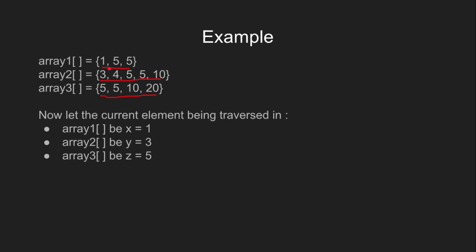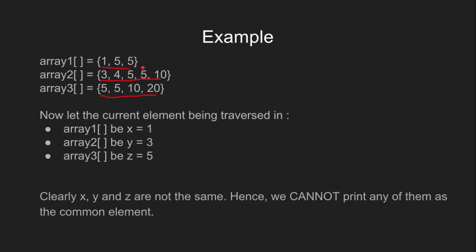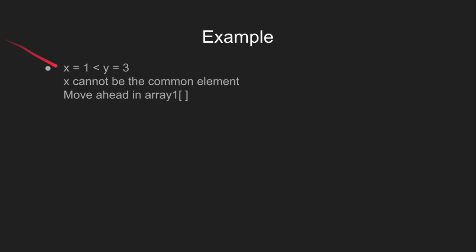Now, the current element will be x equal to 1, for array 2, y equal to 3, and for array 3, z equal to 5. We can clearly see that x, y and z are not the same. Hence, we cannot print them as the common element. We know that x equal to 1 and y equal to 3. So x is less than y. Therefore, x cannot be the common element. So we move ahead in array 1.